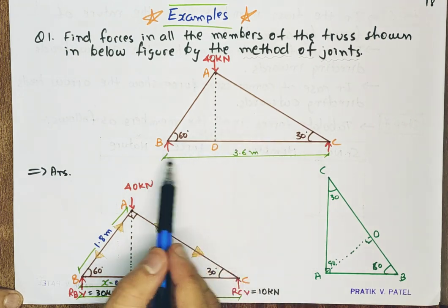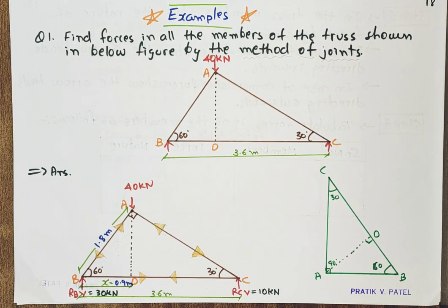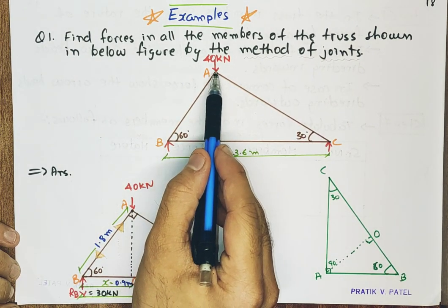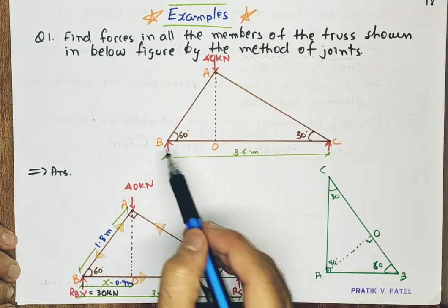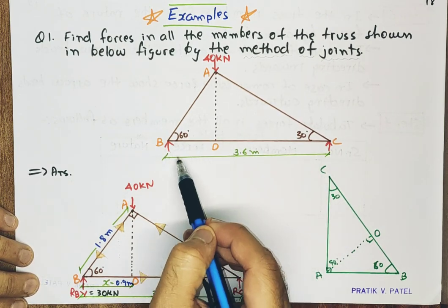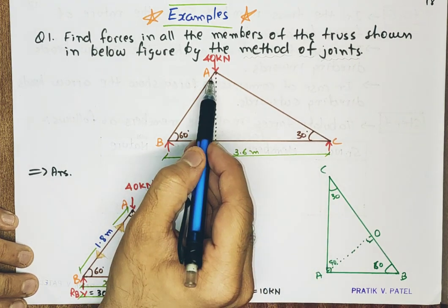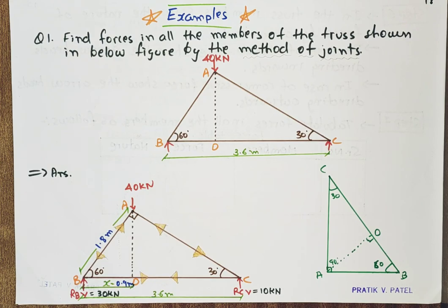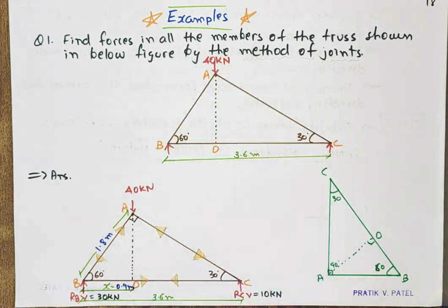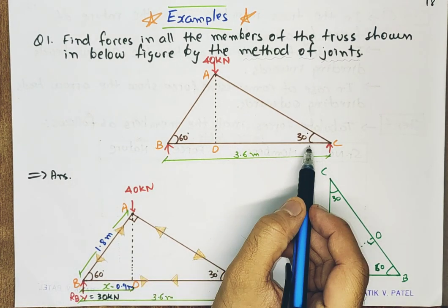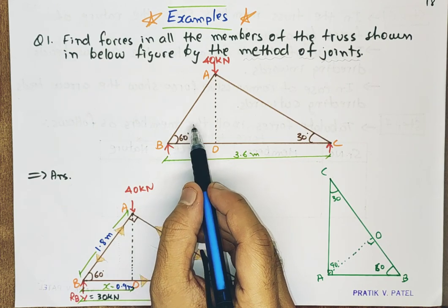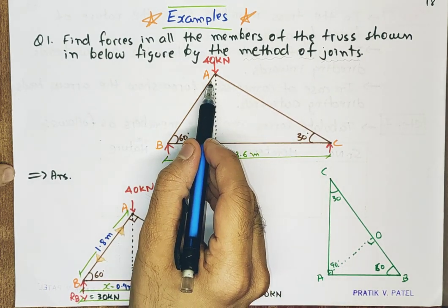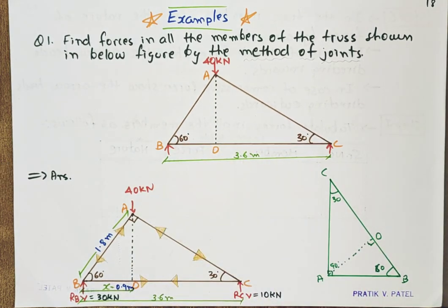This is the truss shown in the question. Each and every detail is mentioned in the truss, and the rest we need to find. At apex, a 40 kN load is given; support reactions need to be found as they are not mentioned. The greatest member — the hypotenuse, at 90 degrees — is given as 3.6 meters, but the lengths of members AC and AB are not given, so we will calculate those also. The main thing to find is forces in all members, i.e., internal stresses. The angle given is 30 degrees and another is 60 degrees; since angles in a triangle sum to 180 degrees, the remaining angle is 90 degrees.